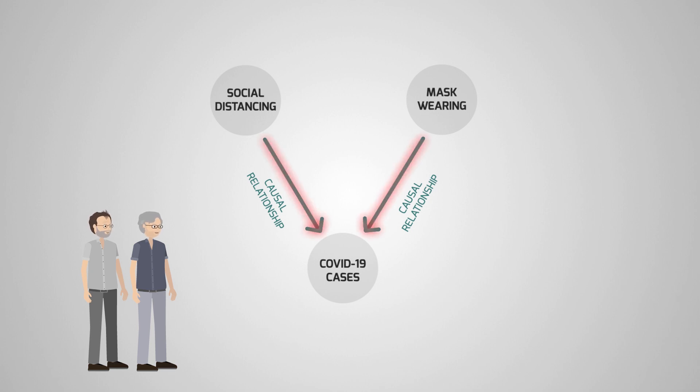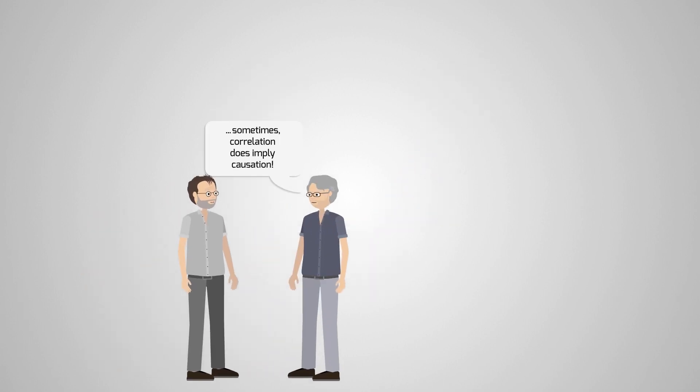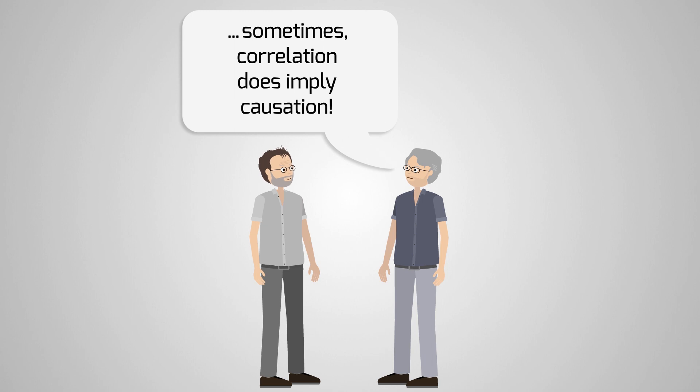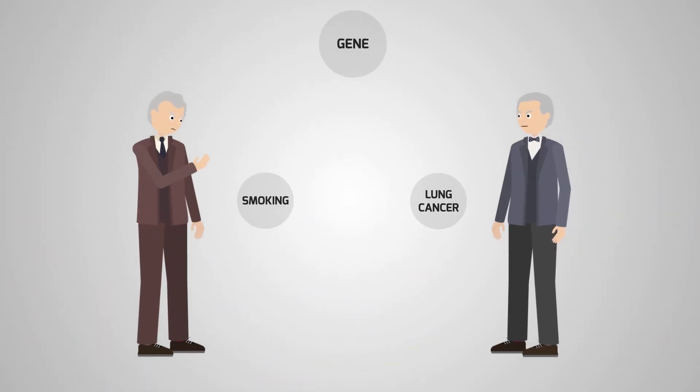Remarkably, we've been able to learn about the causal relationships from observed correlations only. Sometimes, correlation does imply causation. In fact, epidemiologists, including Sir Richard Doll and Sir Austin Bradford Hill, showed conclusively in the 1950s through observational studies that smoking does cause lung cancer.